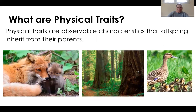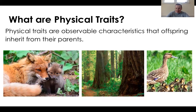What are physical traits? Physical traits are observable characteristics that offspring inherit from their parents. For example, this fox kit has inherited the same shape ear as his mother. In the next picture, if we look at the sapling, it looks like a miniature version of the adult trees, which are his parents.